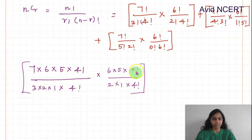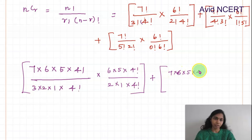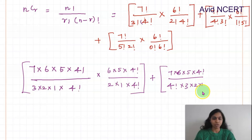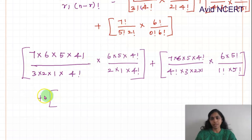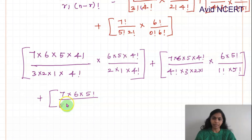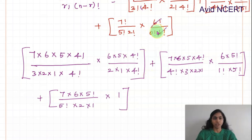For the second term, 7C4: 7 × 6 × 5 × 4! divided by 4! × 3! — 4! cancels, and 3! is 6, giving 7 × 5 = 35. For 6C1: 6 × 5! divided by 1 × 5! — 5! cancels, giving 6. So the second term is 35 × 6. For the third term, 7C5: 7 × 6 × 5! divided by 5! × 2! — 5! cancels, and 2! is 2, giving 7 × 3 = 21. 6C0 = 1.